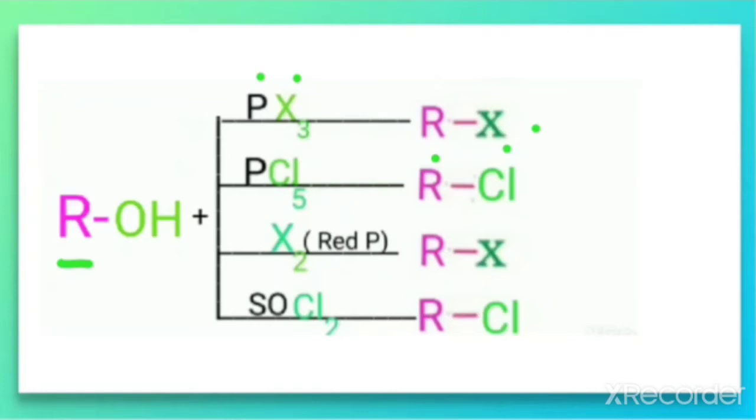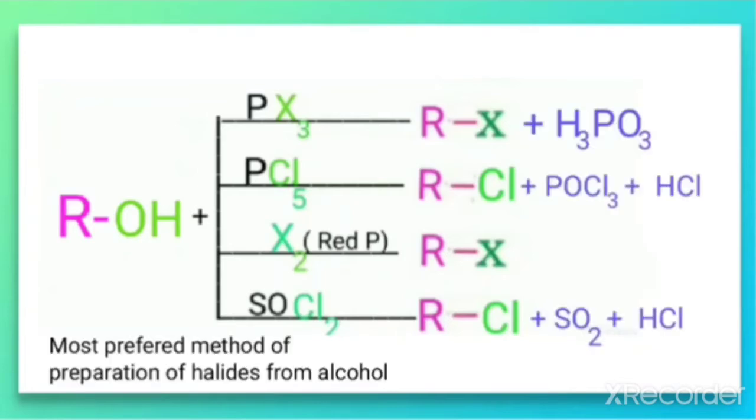PCl5, in all these cases, thionyl chloride, we can find out that we are getting a product that is alkyl halide. But the side products are different. The side product in these cases are in this way.